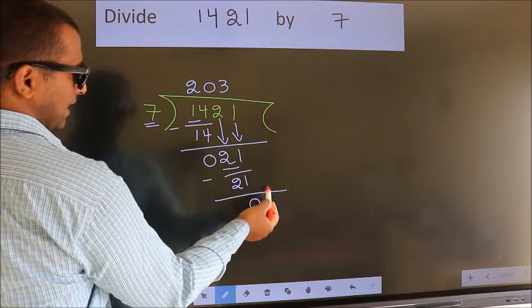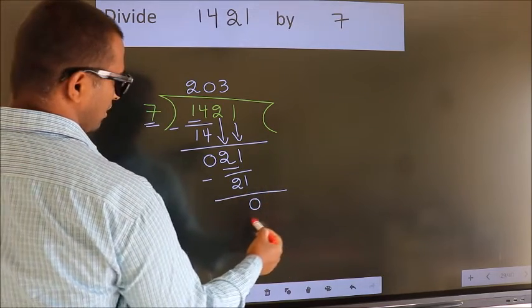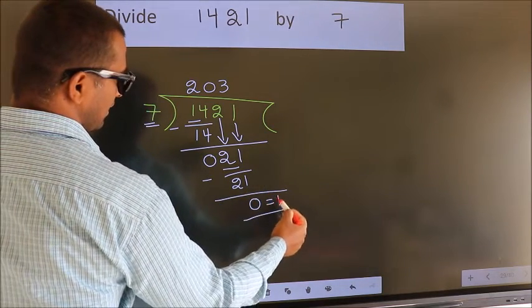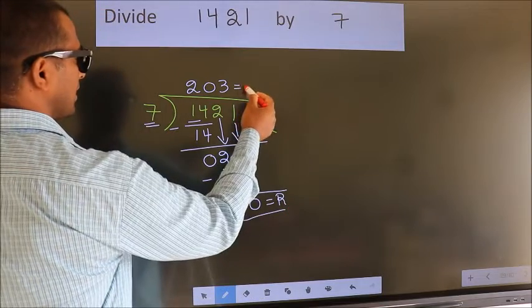No more numbers to bring it down. So we stop here. This is our remainder. This is our quotient.